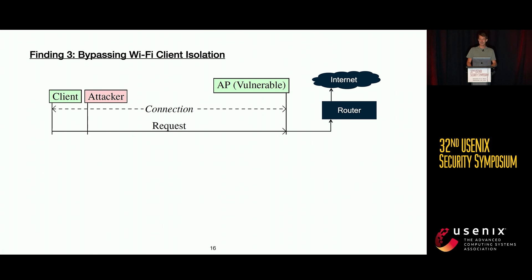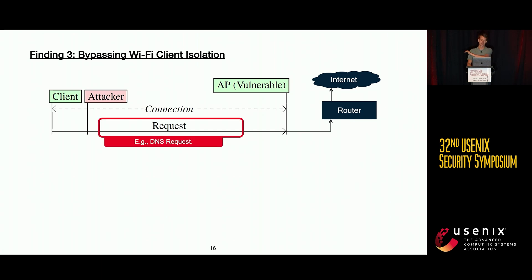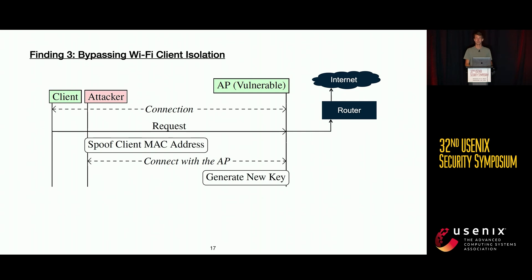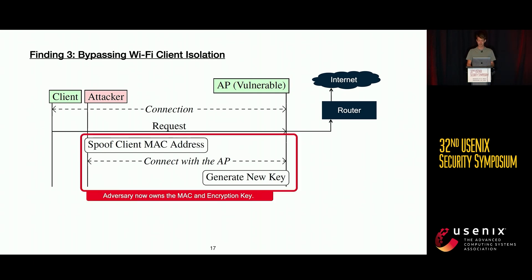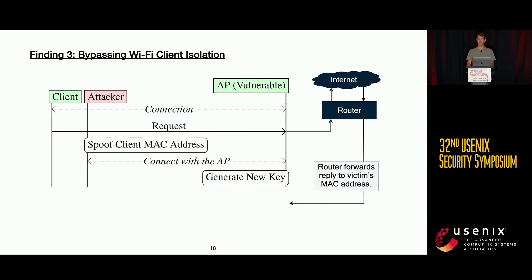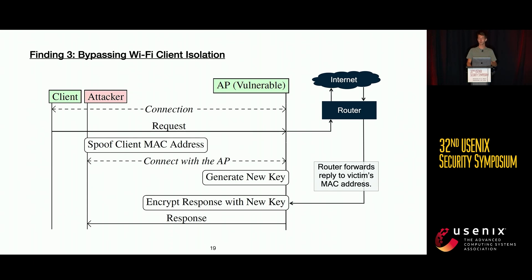Consider this example: a client makes a request to an internet server — say, a DNS request. After this request is sent, an attacker can connect to the access point again using valid credentials but spoofing the MAC address of the original client. The access point generates a new encryption key, which now belongs to the attacker. The attacker has effectively spoofed and taken ownership of that MAC address and the associated encryption key.